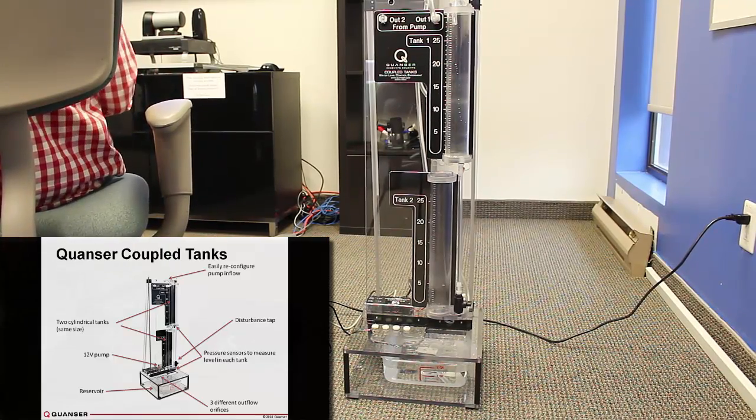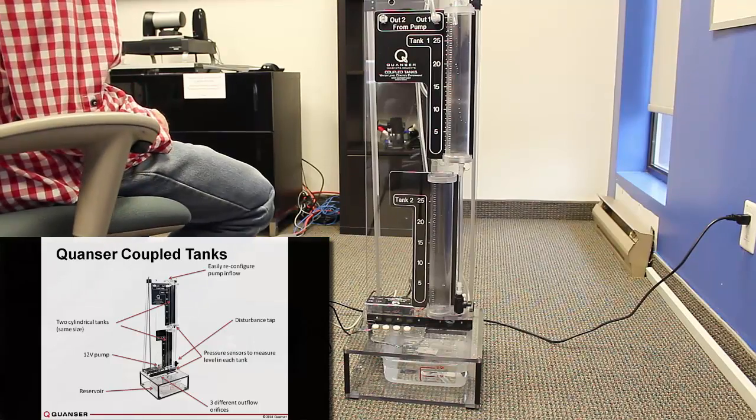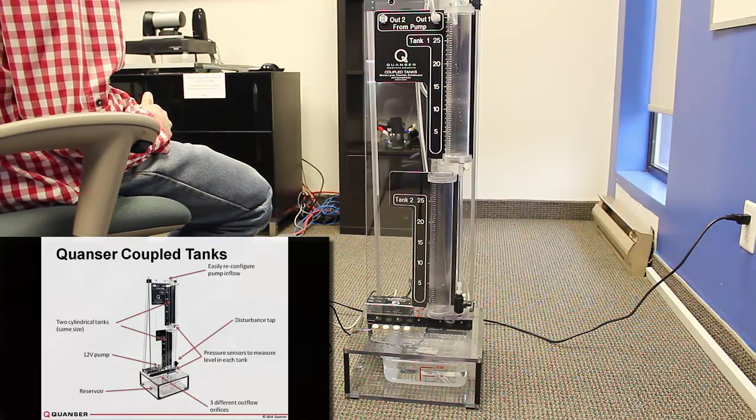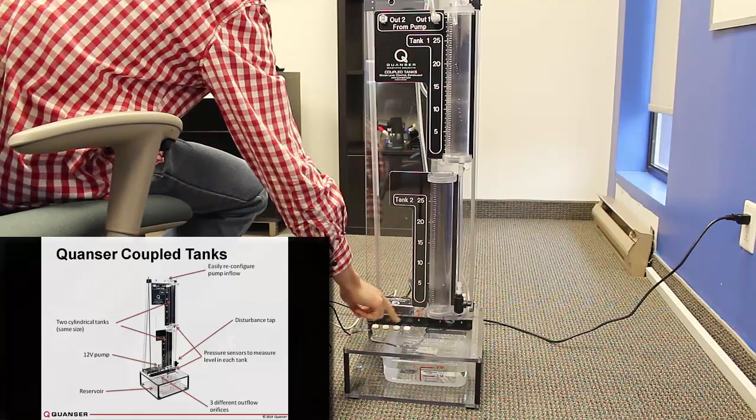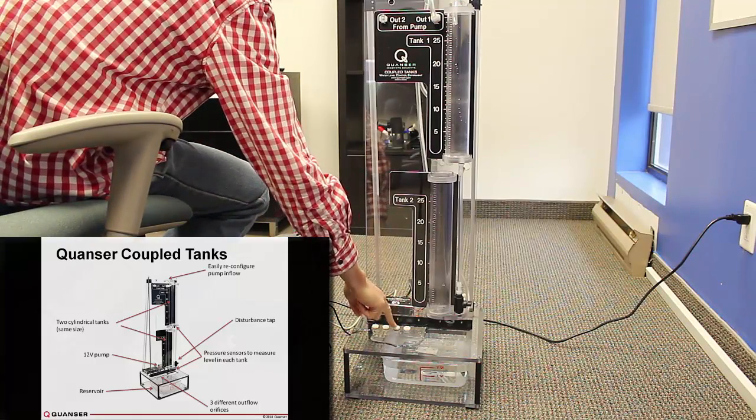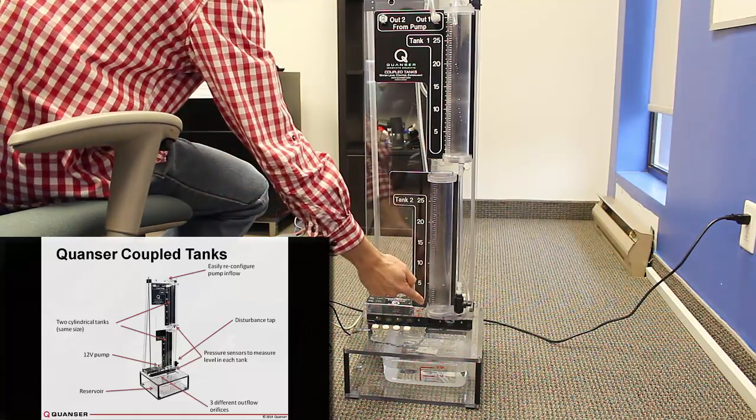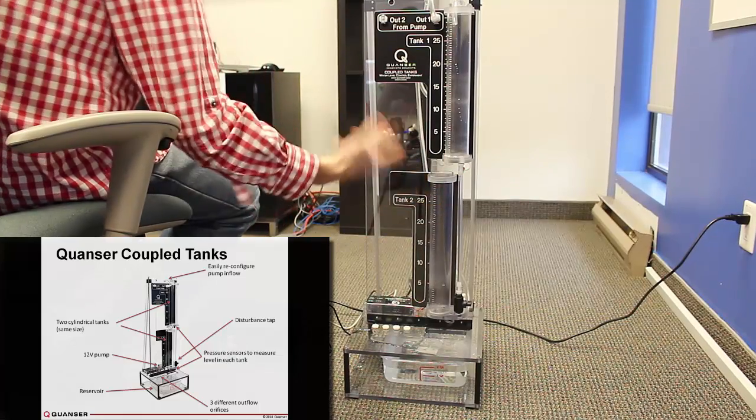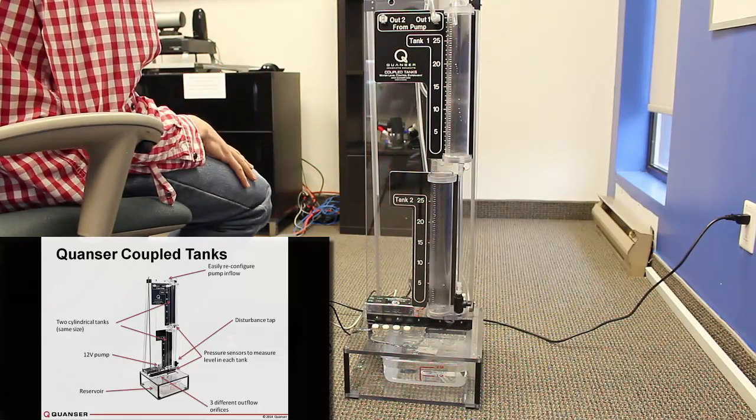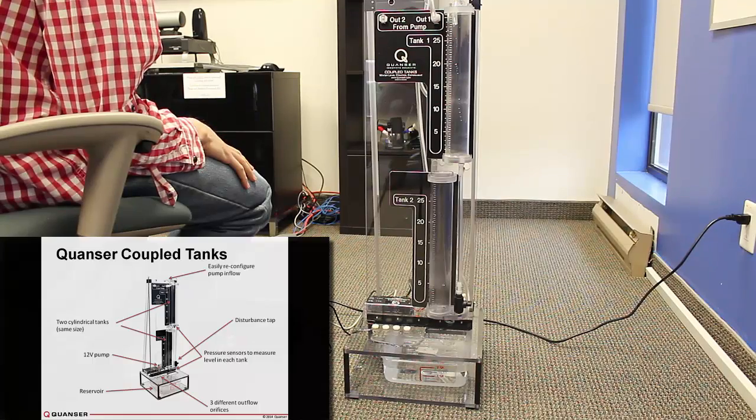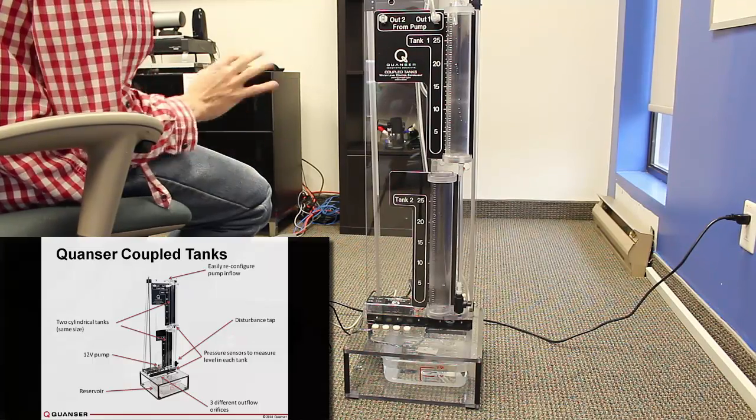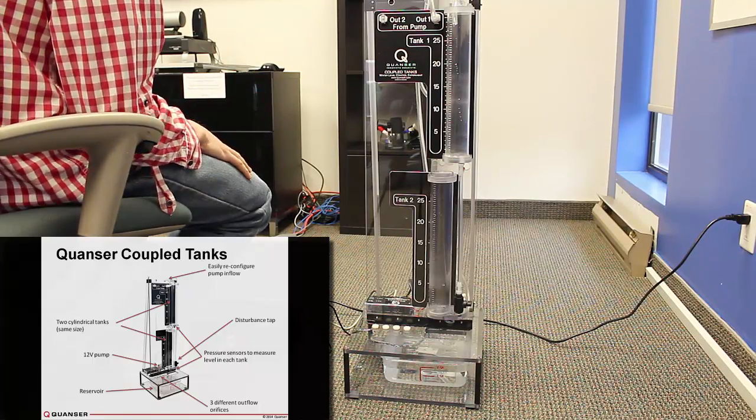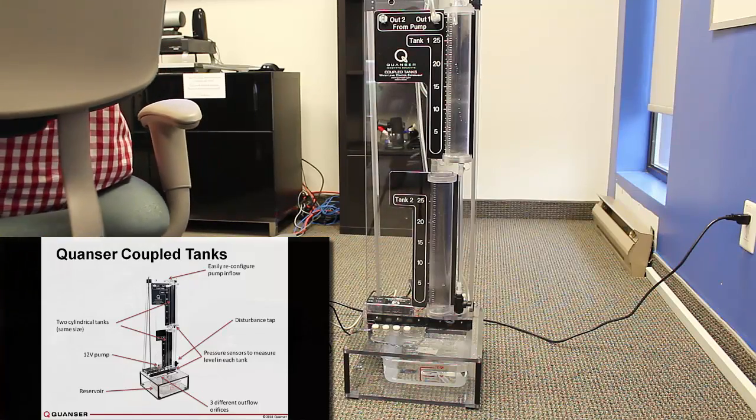To further change, you can change the rate of the outflow of each tank using the different orifices here. So we have a large one, a small one, and the medium ones that are placed on here. You can switch these up and change the flow rate of the system. So again, that reconfigurability notion of the coupled tanks. Definitely a theme for this product.